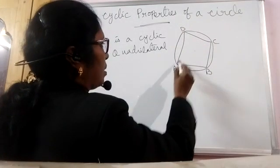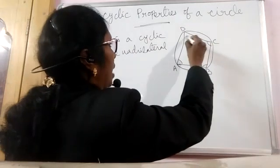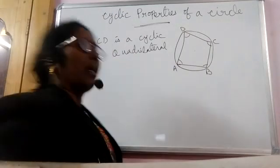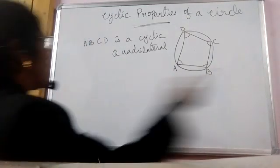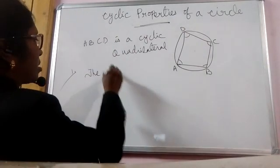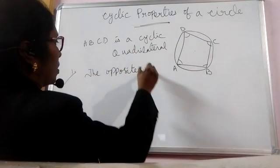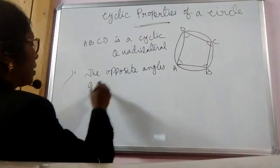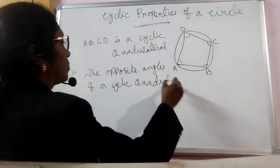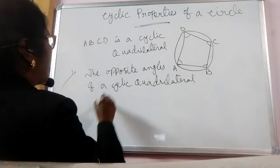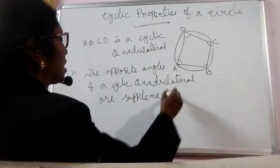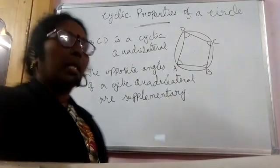In a cyclic quadrilateral we get 4 angles. Angle A and angle C are opposite angles, and angle B and angle D are opposite angles. The first property is: the opposite angles of a cyclic quadrilateral are supplementary. Otherwise we can say the sum of the opposite angles of a cyclic quadrilateral is 180 degrees.